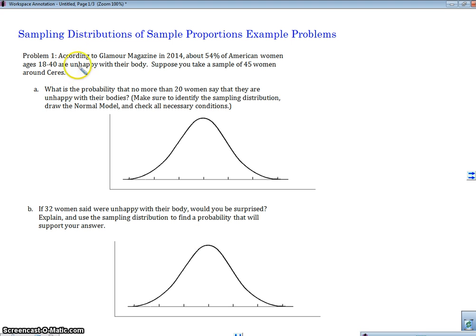It says, according to Glamour magazine, I actually looked this up just right now online, 54% of American women ages 18 to 40 said that they're unhappy with their body. So let's suppose we're taking a sample of 45 women around Ceres. Now, if you don't know where that is, it's a small town in California.